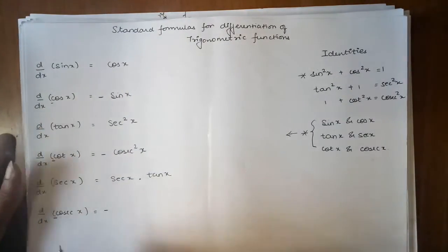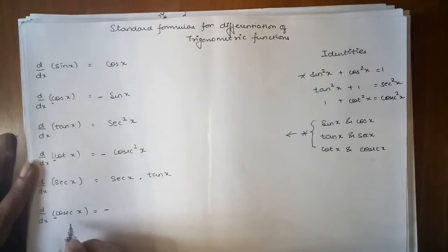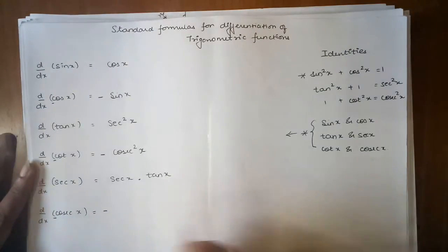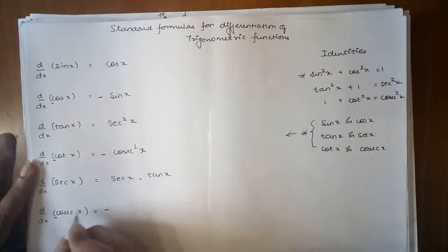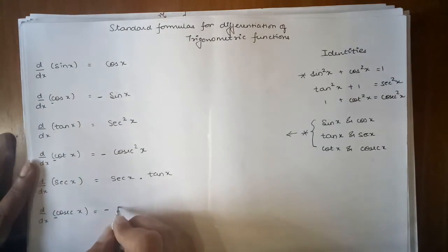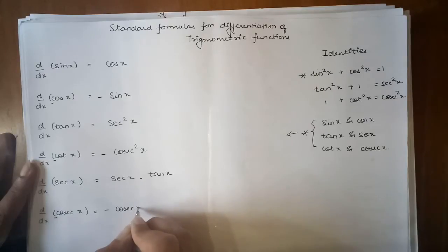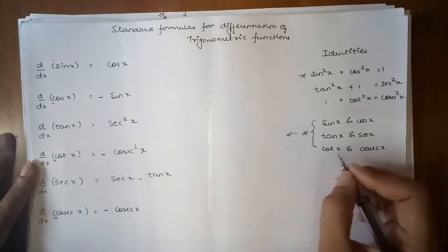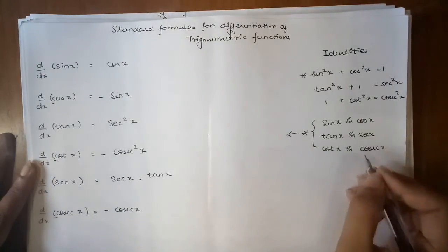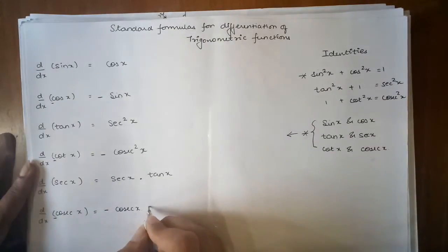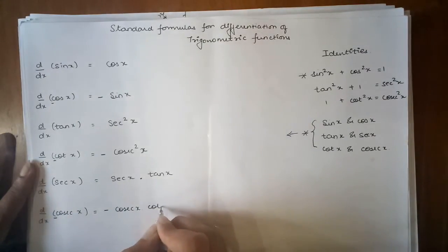Similarly, differentiation of cosec x: write down the question first, giving us minus cosec x, and what is left over from this is cot x. So the answer is minus cosec x cot x.